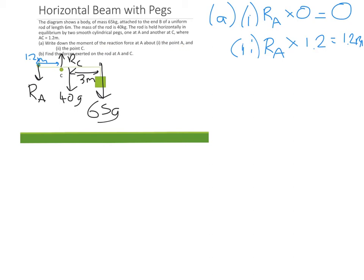On to part B then. We're going to find the forces exerted on the rod at A and B. So basically, what are the reaction forces at A and at C? This we're going to treat in exactly the same way to what we've been doing so far. So we're going to start off by resolving vertically. So resolving vertically. Upwards we've got RC, and downwards we've got RA and 105G in total. So it's actually going to come out to be 105G.